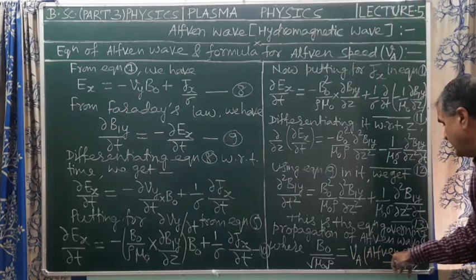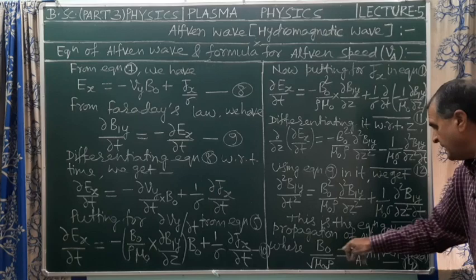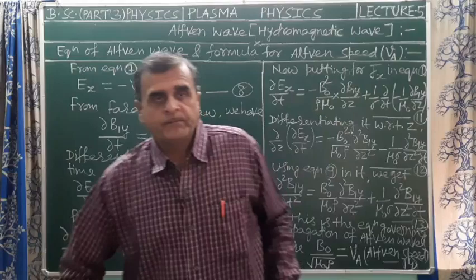So the formula for Alfvén speed is: BA = B0 / √(μ0 × ρ). This concludes the video.